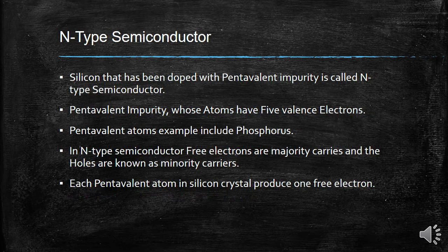N-type semiconductors use pentavalent impurities such as phosphorus. N-type semiconductors have a majority of electrons and carry a negative charge, while P-type carries a positive charge. Each pentavalent atom in the silicon crystal produces one free electron.